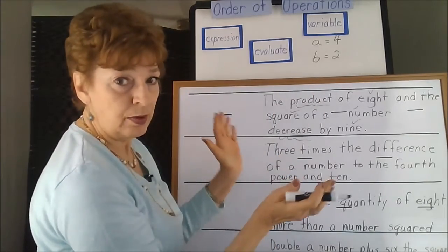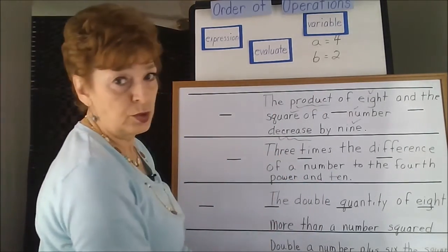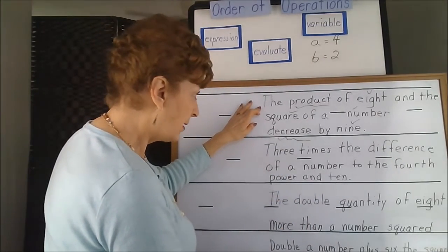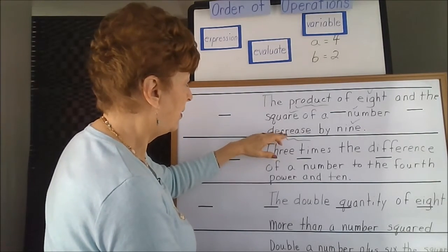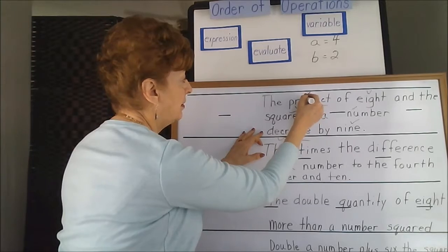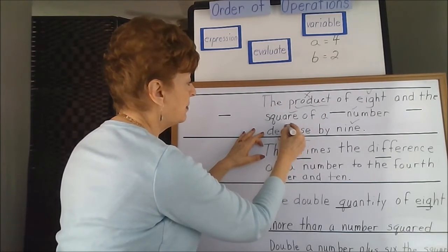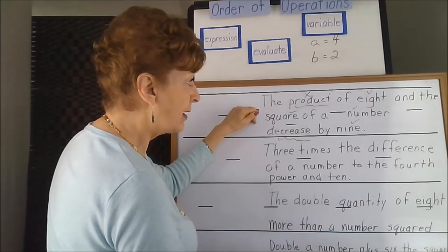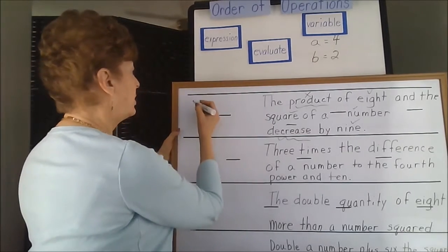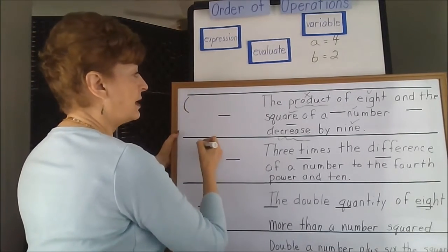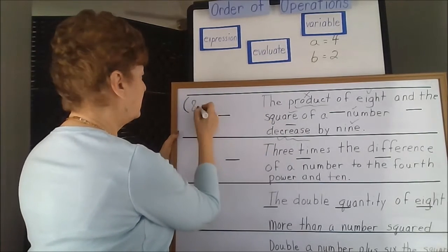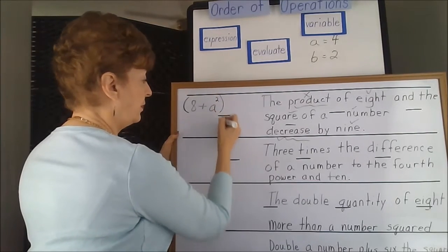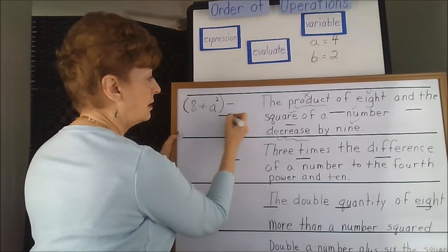Something is probably going to be grouped with parentheses or the grouping lines. The product of 8 and the square of a number — here we have a multiplication symbol, and here we have a subtraction symbol. So we're going to be grouping the product of 8 and the square of a number. Here's our grouping symbol — we'll put parentheses — 8 and the square of a number, so let's do a squared, decreased by 9.